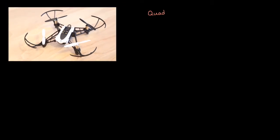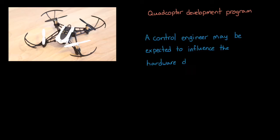Now, if you're the control engineer for a quadcopter development program, that wouldn't be the case. You would probably be expected to guide and influence the design process so that the hardware is appropriately designed to meet your control requirements. But since our hardware is already built, we have to deal with what's given to us. So let's take a look at the mini drone and see what we have to work with.